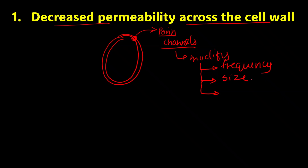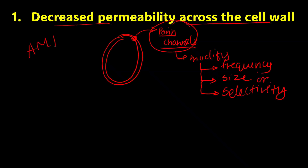The bacteria can alter the size of these channels so that antimicrobial agents cannot enter inside. It can also make changes in the selectivity of the channel. Ultimately, what happens is that the antimicrobial agent is unable to enter into the bacteria — that is the mechanism of decreased permeability.